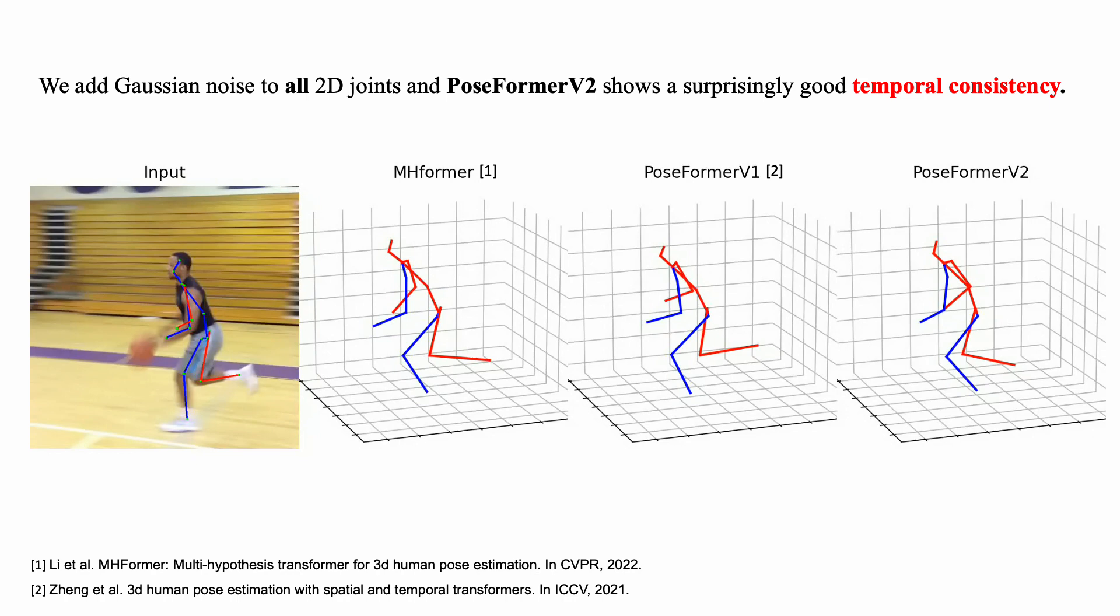We add Gaussian noise to all 2D joints, and PoseFormer V2 shows surprisingly good temporal consistency.